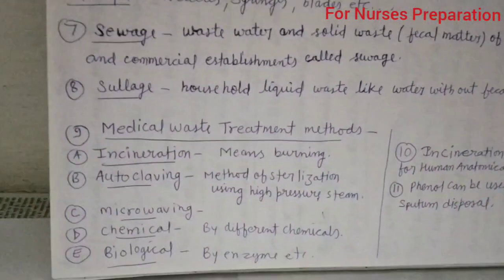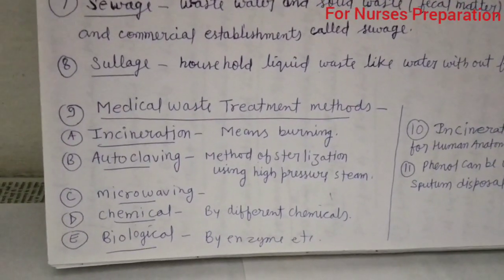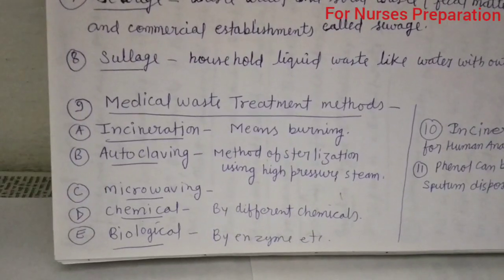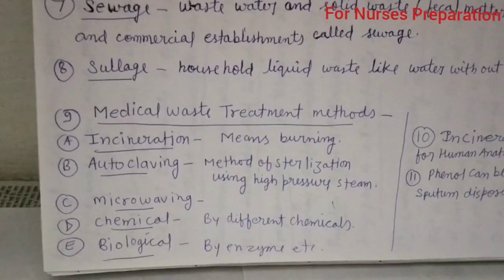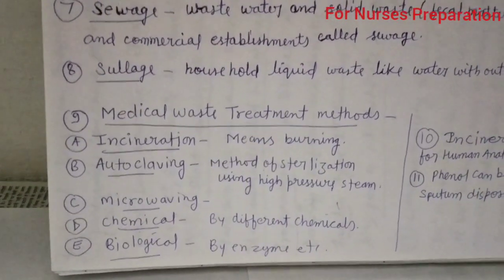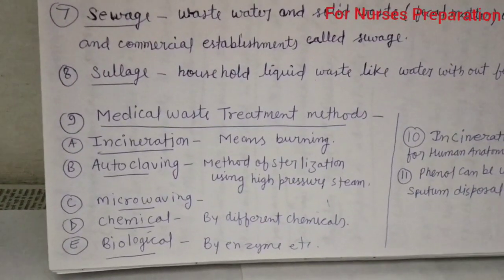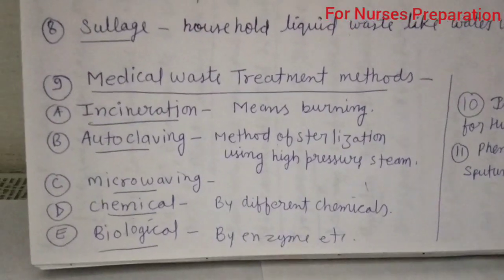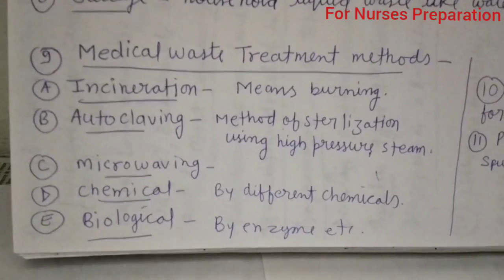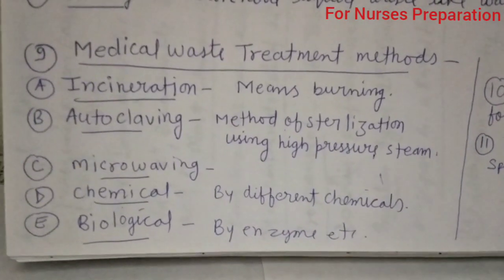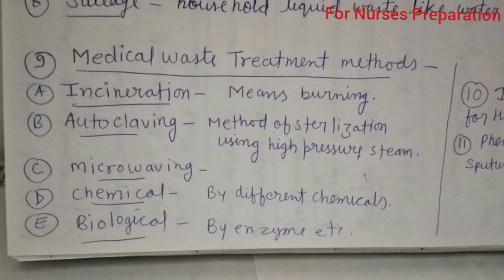Point number nine: medical waste treatment methods. We can treat medical waste by five methods: incineration, autoclaving, microwaving, chemical, and biological methods. Incineration means simply burning the waste. Autoclaving is a method of sterilization in which we use high-pressure steam. Microwaving uses microwaves to disinfect or treat substances. Chemical methods use chemicals, and biological methods use enzymes to treat the waste.